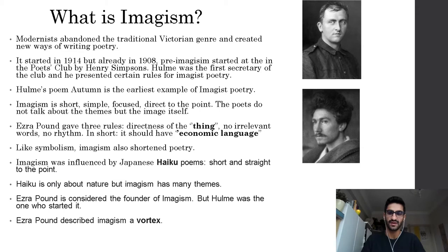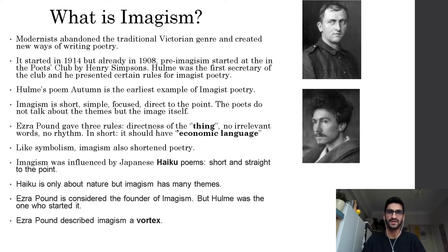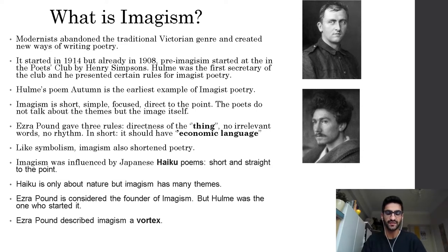Ezra Pound — shown in the second picture below Hulme's photo — gave three rules: directness of the thing (the 'thing' meaning the subject they are writing about), no irrelevant words, and free verse. One key difference from Victorian poetry was that modern poets abandoned the old rhyming scheme and rhythm, preferring to write in free verse. In short, an imagist poem should have economic language: it should be short, understandable, and very straightforward.